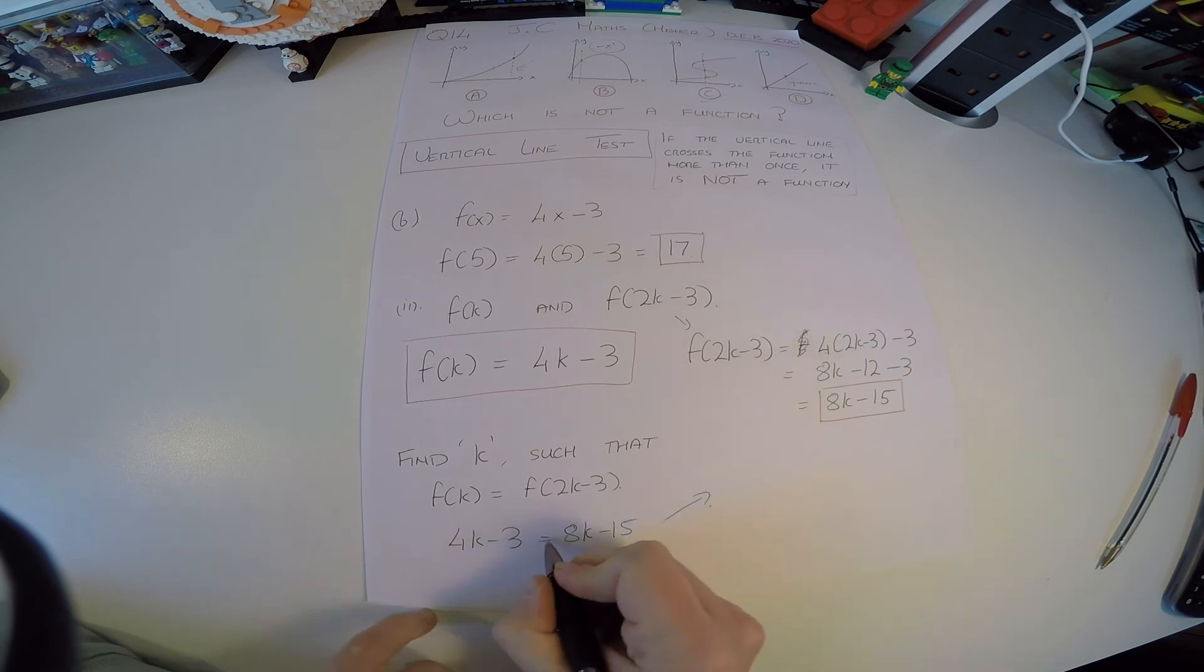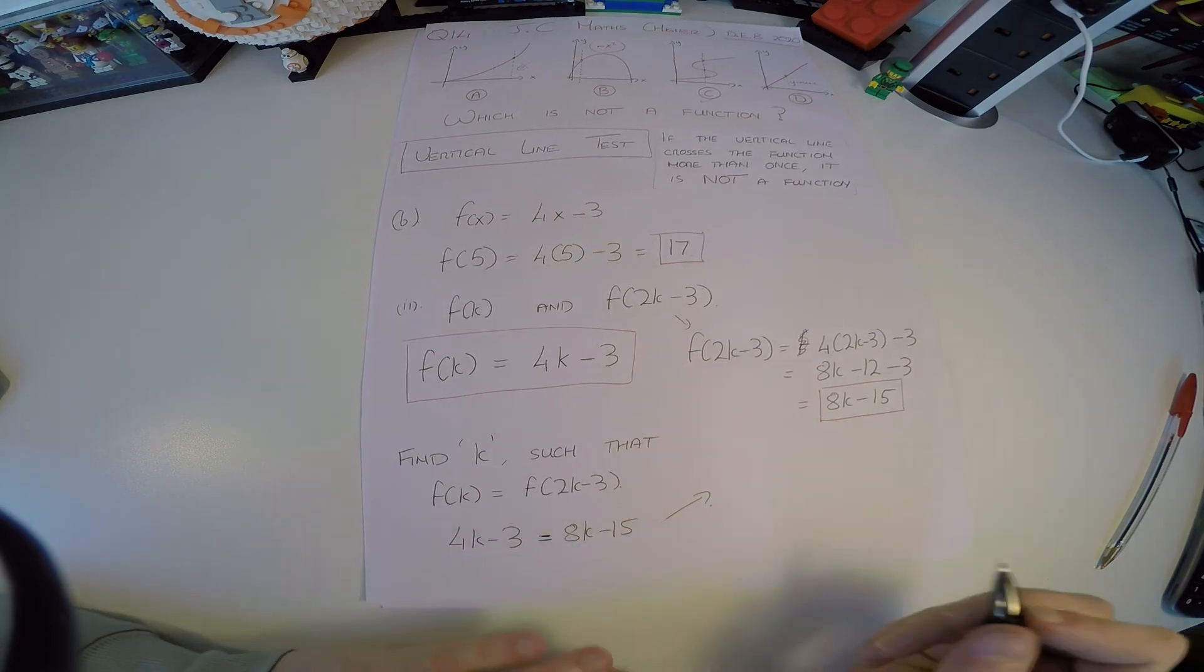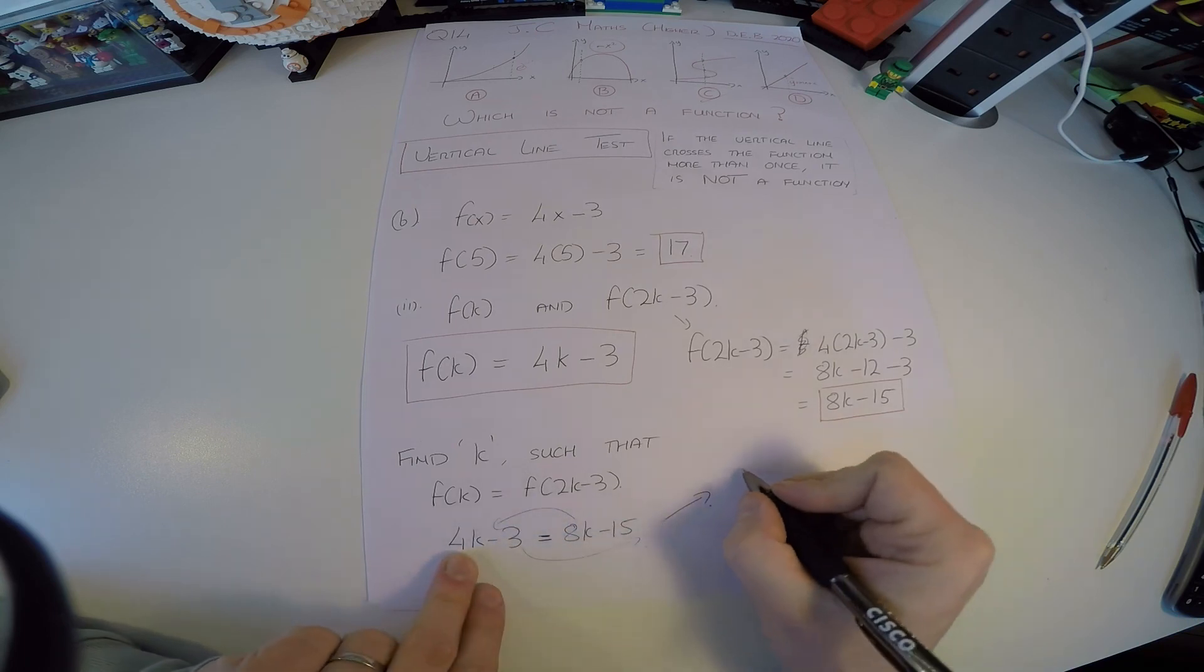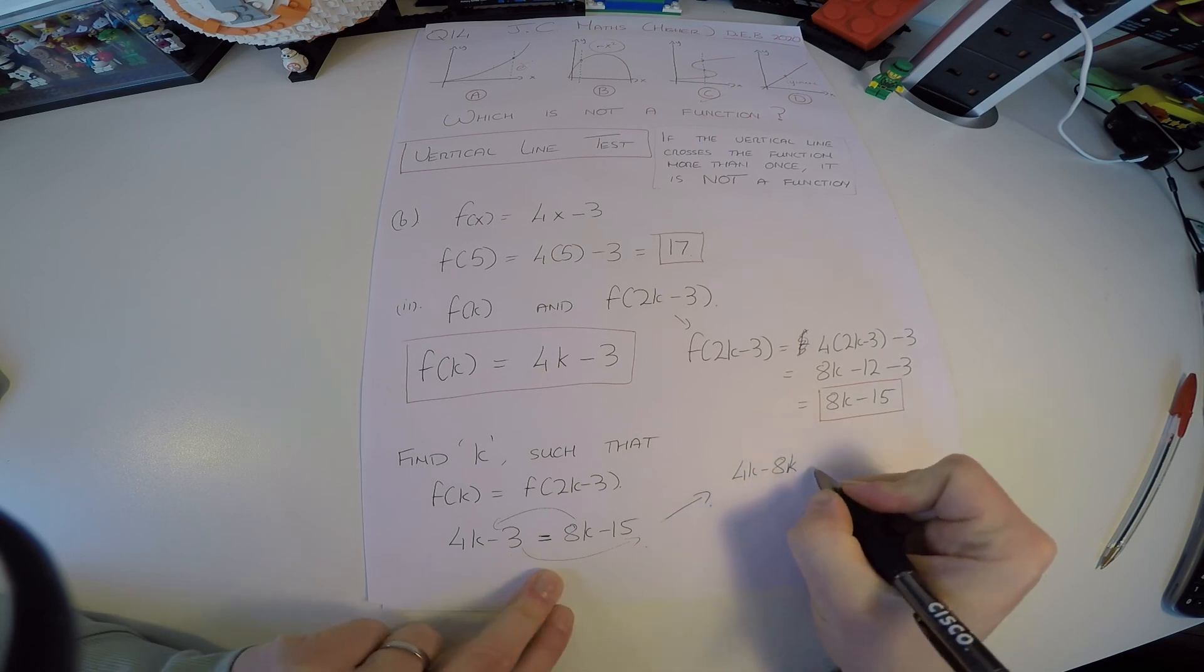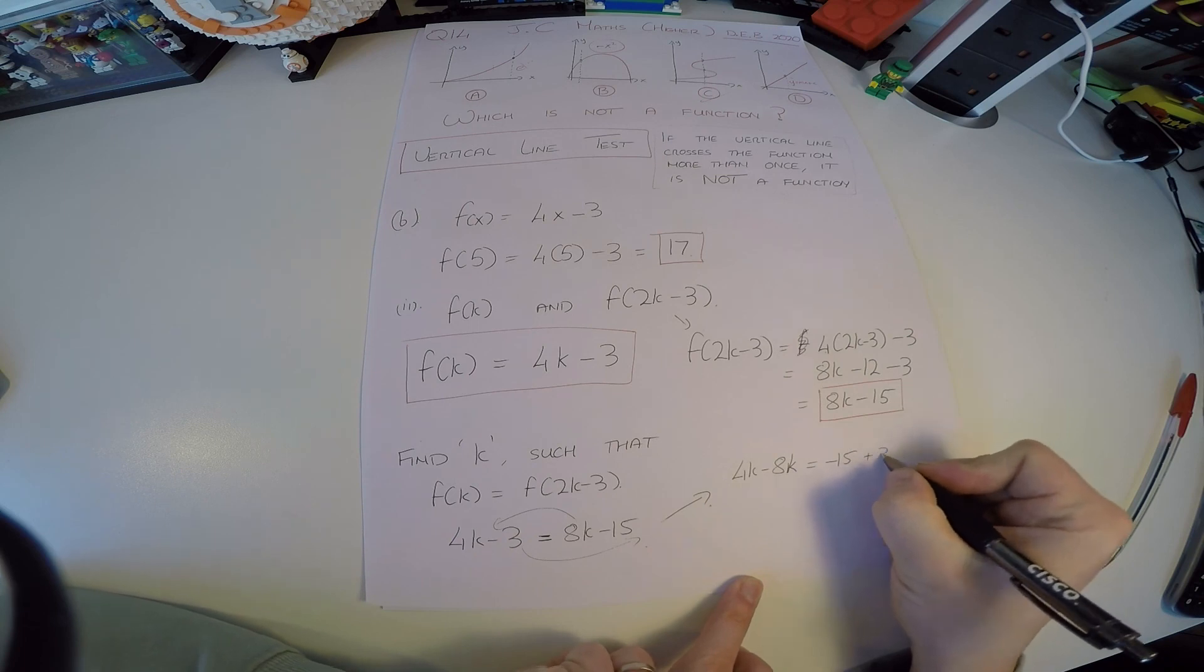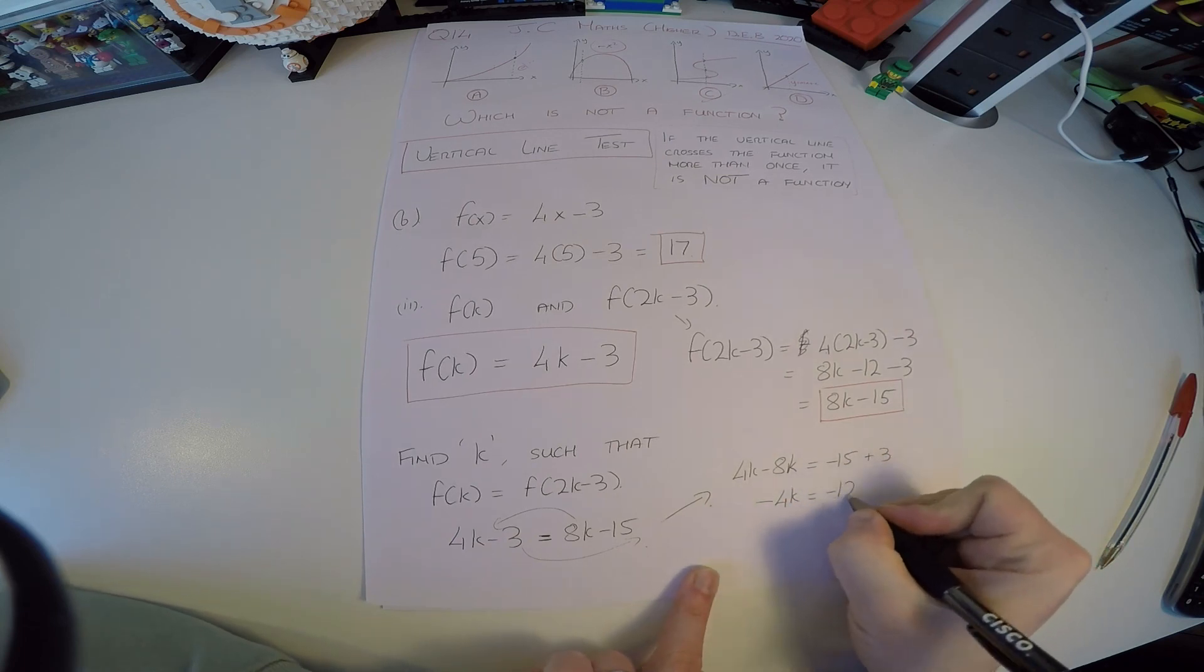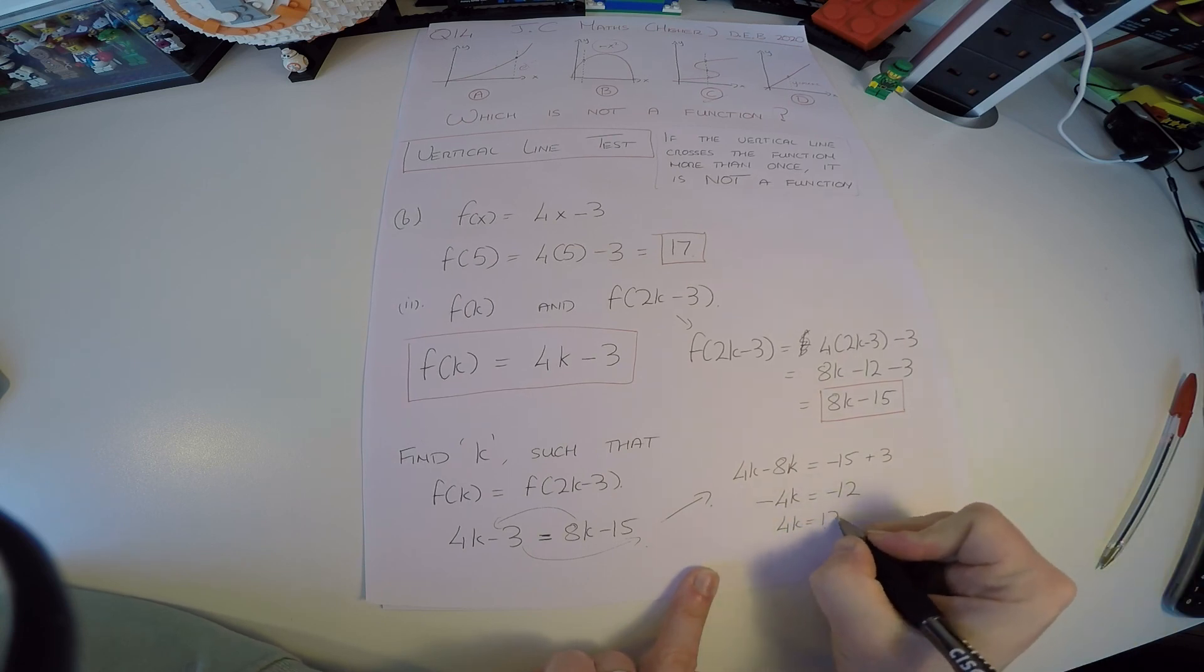So I'll simply just solve this equation. It's an equation when we have an equals. So we can solve this. We have one variable, one equation. That's good enough. Let's bring the k's to one side and the numbers to the other. So when 8k comes over, it becomes a minus 8k. We have minus 15 over here. When 3 comes over, it becomes a plus 3. That gives us minus 4k is equal to minus 12. Let's get rid of those negative signs.